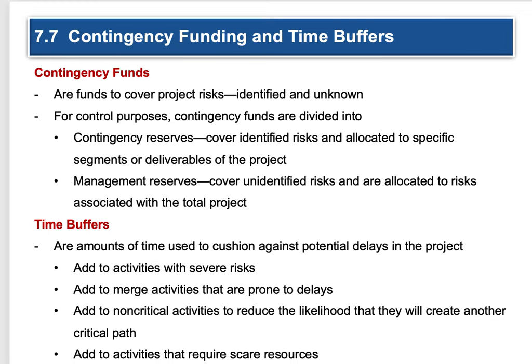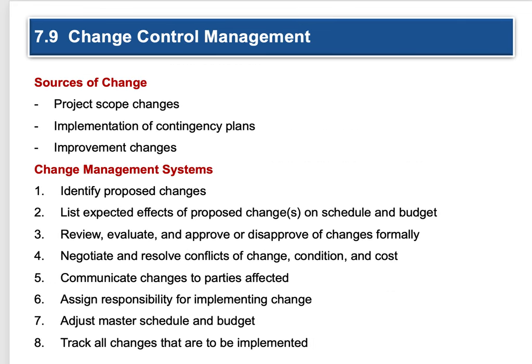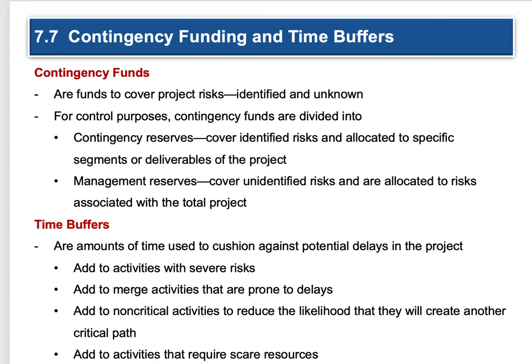Contingency funds cover project risks — both identified and unknown. For control purposes, contingency funds are divided into contingency reserves, which cover identified risks and are allocated to specific segments and deliverables on the project — for example, do I need liability insurance for my event business and how much does that build into my budget? Management reserves cover unidentified risks and are allocated to risks associated with the total project. Time buffers are amounts of time used to cushion against potential delays. Add buffers to activities with severe risks, to merge activities prone to delays, to non-critical activities to reduce the likelihood they'll create another critical path, and to activities that require scarce resources.